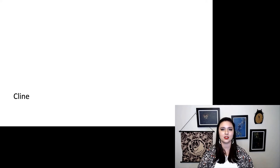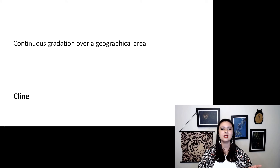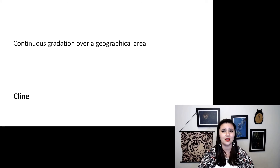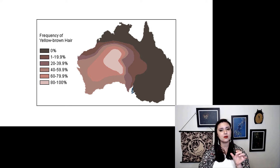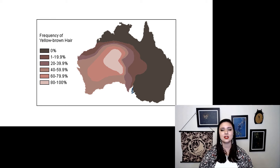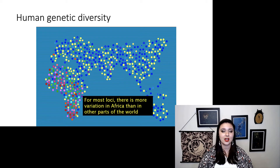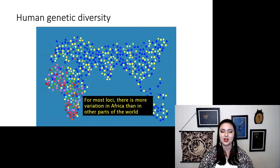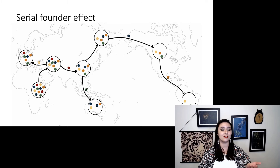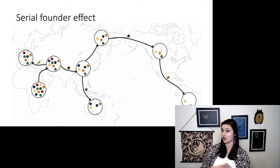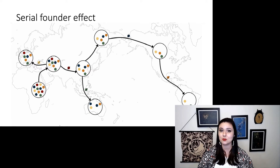Another thing we see when looking at human biological variation is something called a cline — a continuous gradation over a geographical area. We see these all over in biology and in all different species. Here's a simple example: the frequency of yellow-brown hair in Australian Aboriginals has really high incidence in one spot, but the farther you get away from that spot, it decreases in frequency. Another way to visualize genetic diversity is through color, where we see more different lineages — more different colors — in Africa, but the farther away you get from Africa, you're finding fewer and fewer. This is called a serial founder effect.